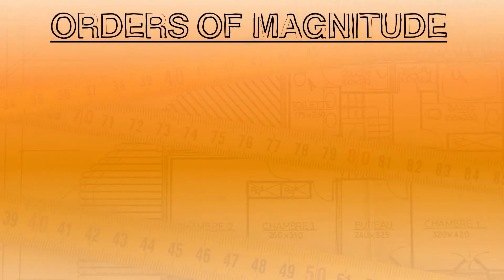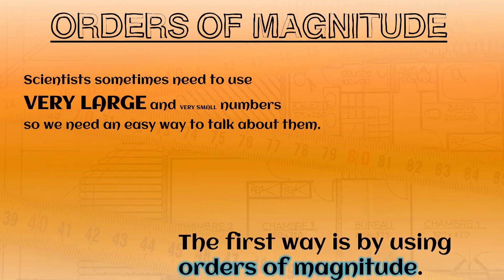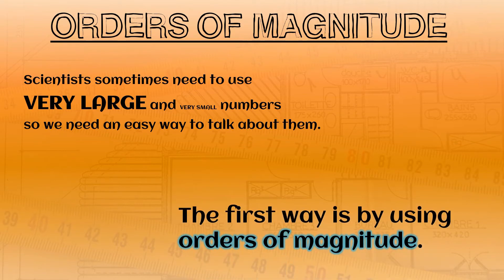Orders of magnitude are ways of using very large and very small numbers. Sometimes in science we are dealing with millions, billions, trillions or even larger numbers. The first way we have of doing this is to use named orders of magnitude.